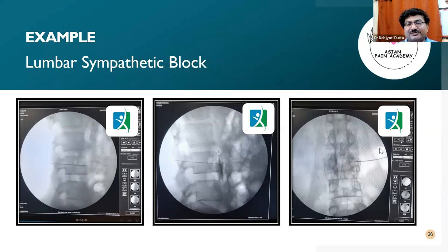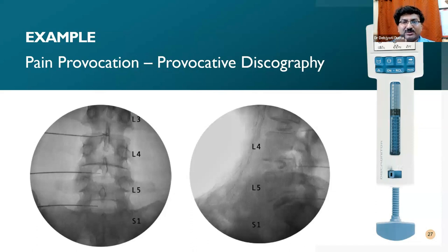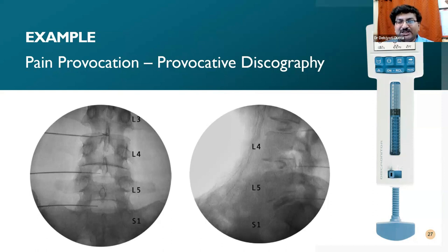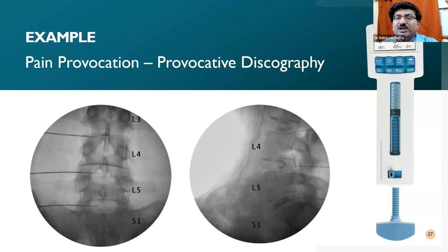Local anesthetic injection is not the only consideration. In some conditions like discogenic pain — pain coming from the disc — to prove that this disc is painful, we use an instrument called a discometer and go inside the disc. We then increase the intradiscal pressure by injecting normal saline, and by increasing this pressure, we try to provoke the pain. This is a pain provocation under a controlled environment and can be a part of a diagnostic intervention. Provocative discography is one example of a diagnostic intervention to identify the disc as a pain generator.